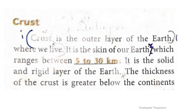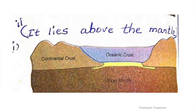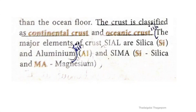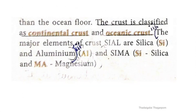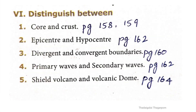Crust is the outer layer of the earth. It lies above the mantle. The major elements of crust are silica and aluminium. Core and crust are three points. Second question: epicenter and hypocenter. The answer is given in page 162.